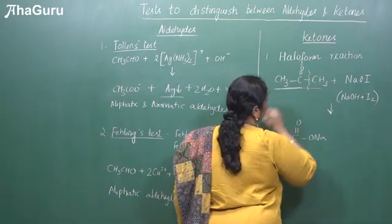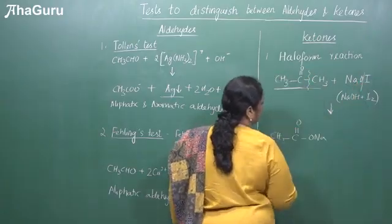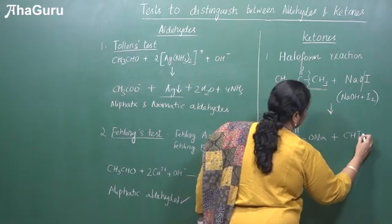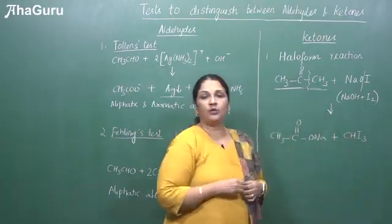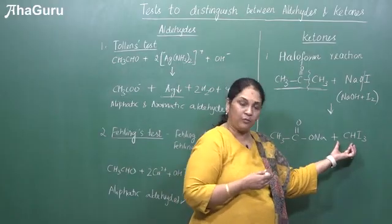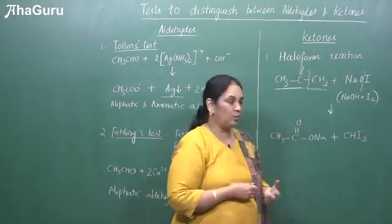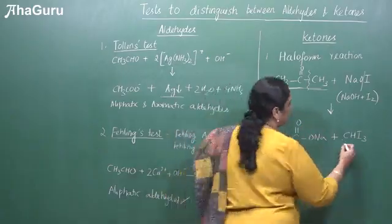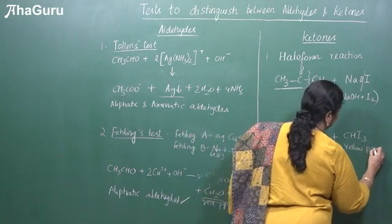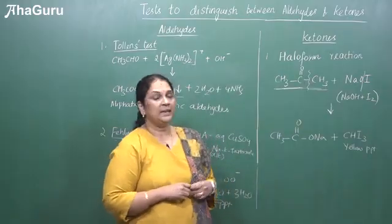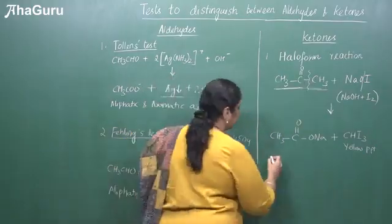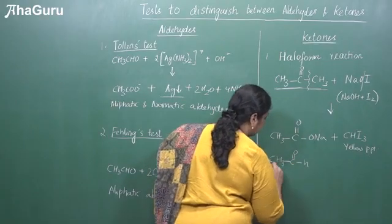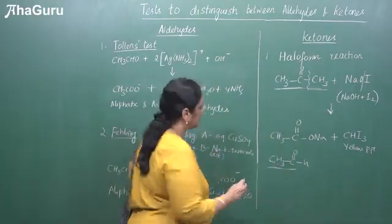If we break the molecule here, the COONa part gets attached to give the carboxylate, and the CH₃ part gets converted to the haloform — that is CHI₃, which is iodoform. If you take bromine, it will form bromoform CHBr₃; if you take chlorine, it will form CHCl₃, which is chloroform. If iodoform is formed, you will see a pale yellow precipitate. Another important point is that this test can also be answered by an aldehyde, specifically CH₃CHO, because there is a CH₃ group attached to the CO group.